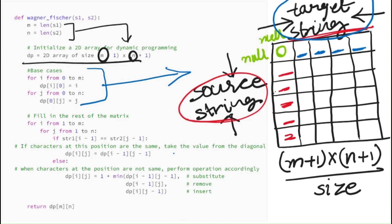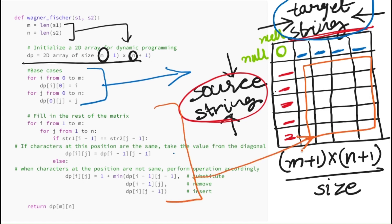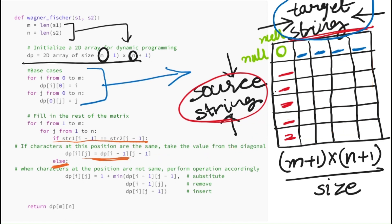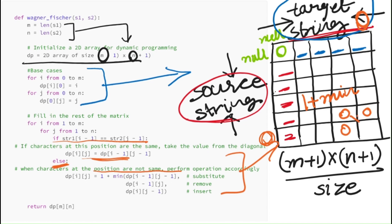We fill the rest of the matrix using a nested loop, walking through the source string and the target string. For each cell (i, j), we check if the characters at positions i and j in the input strings are the same. If they are the same, we take the value from the diagonal element. Otherwise, we need to perform an operation — we take the minimum of three adjacent cells (substitute, remove, or insert) and add one to it.